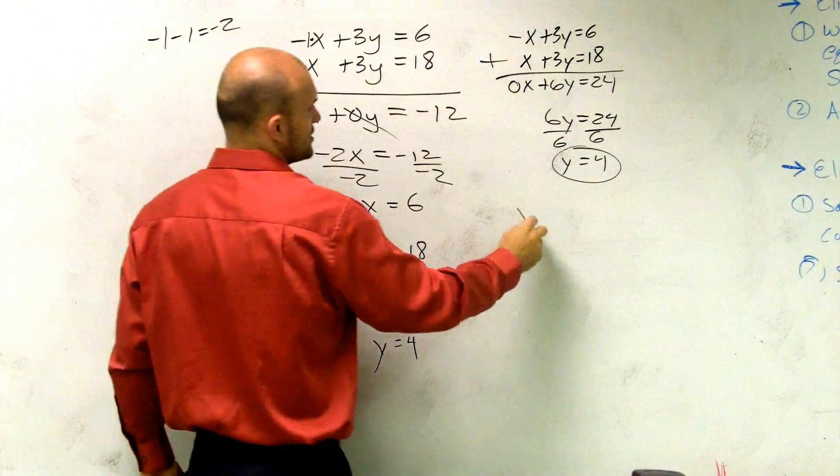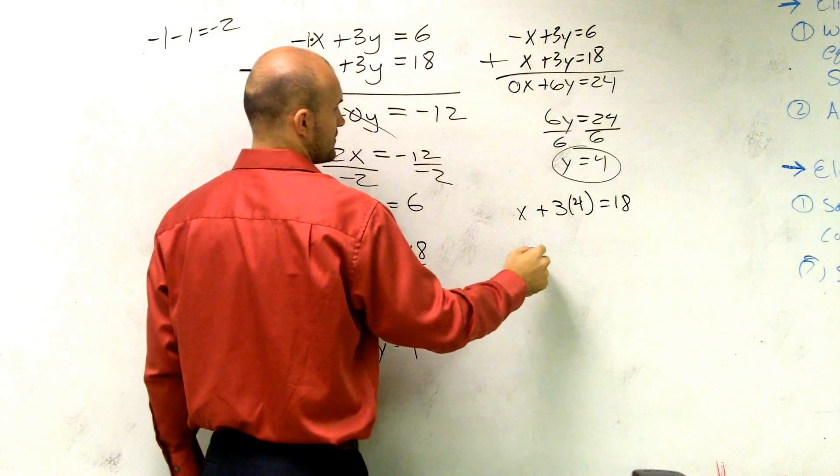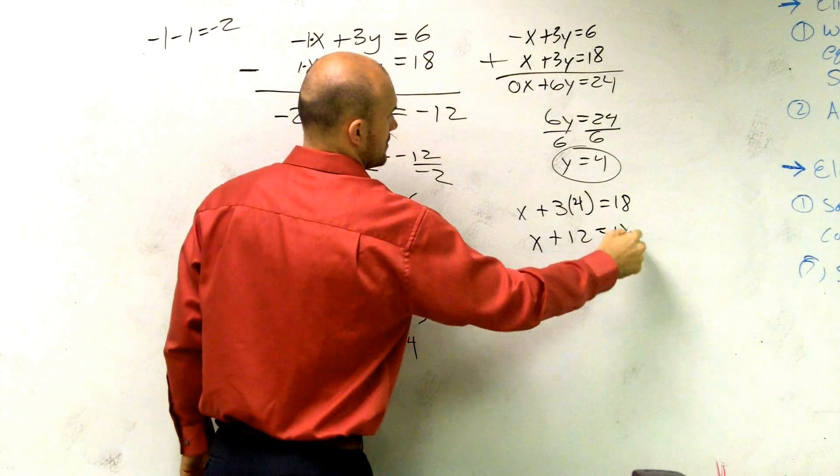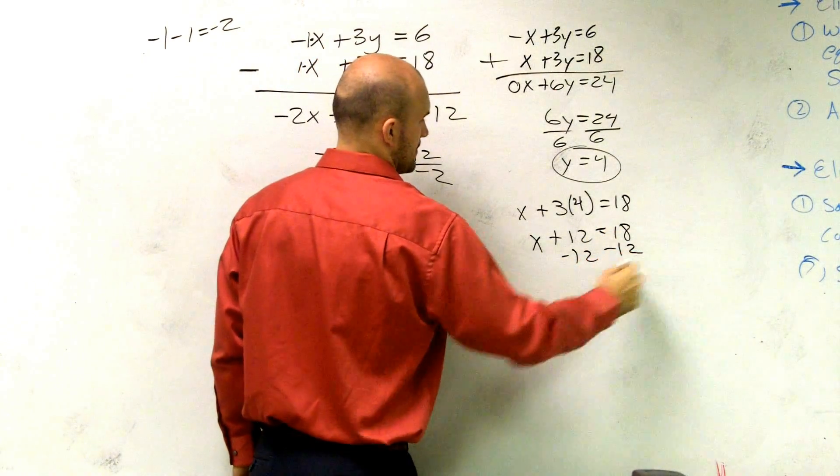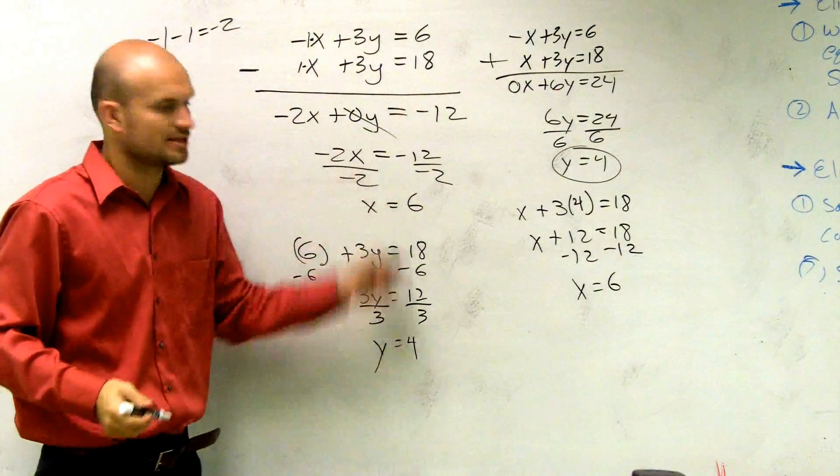So if you did it this way, you could have x plus 3 times 4 equals 18. Right. 3 times 4 is 12. Right. Then you'd subtract 12. And there you go. Still, you still get the same answer.